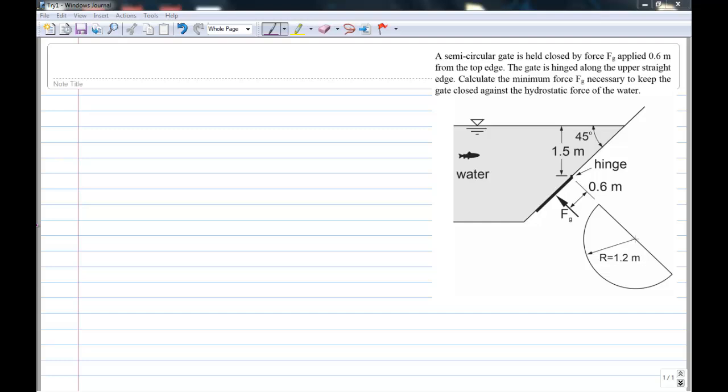This is an example of calculating the hydrostatic force on a semicircular gate. So this is a plain surface, a flat gate. And the problem reads, a semicircular gate is held closed by force Fg. You can see it here.